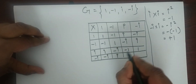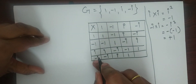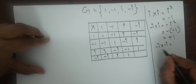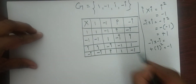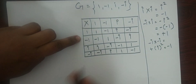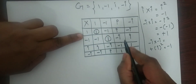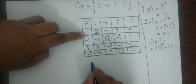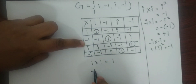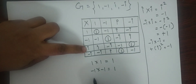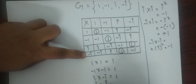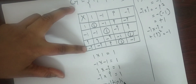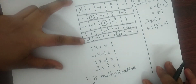-i into -i is +i. i into -i is +1. And -i into -i: minus i becomes plus and here is i squared, that is -1. So right here -1. From this composition table, where is 1? Make a circle: 1 here, 1 here also. So 1 is the multiplicative identity for this group G.